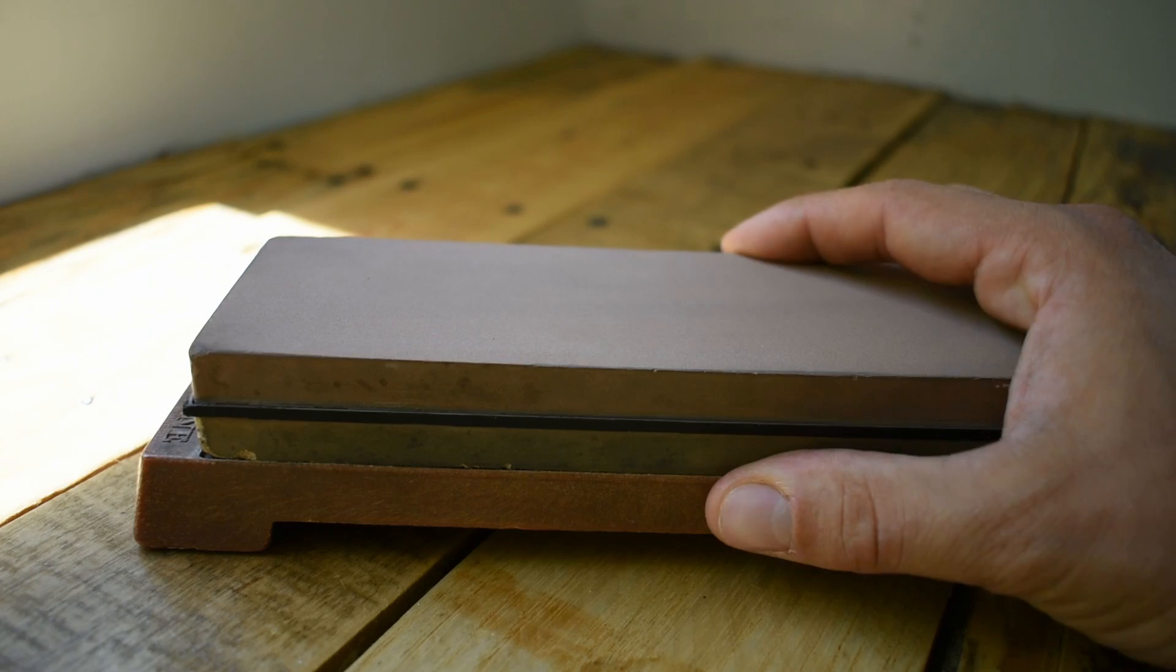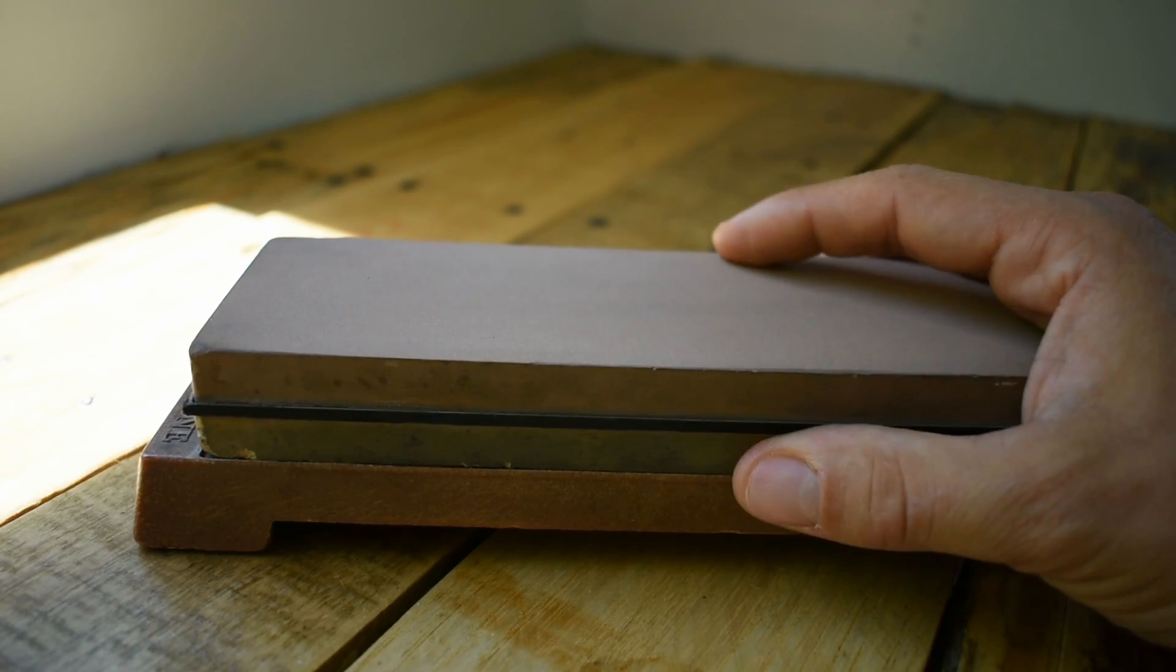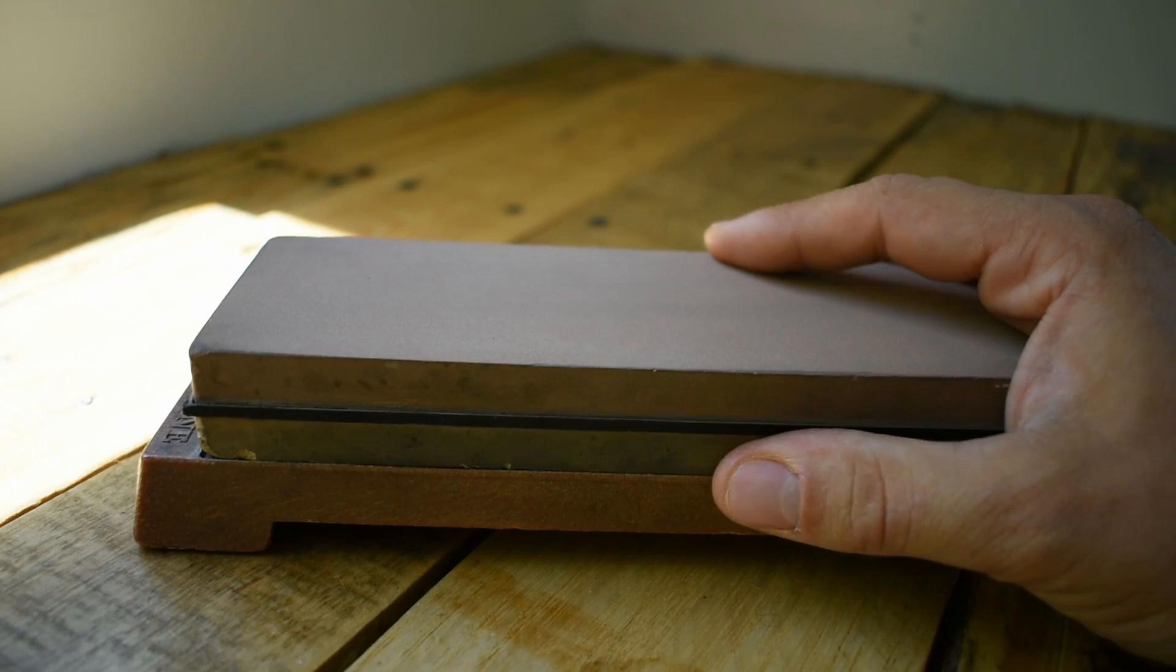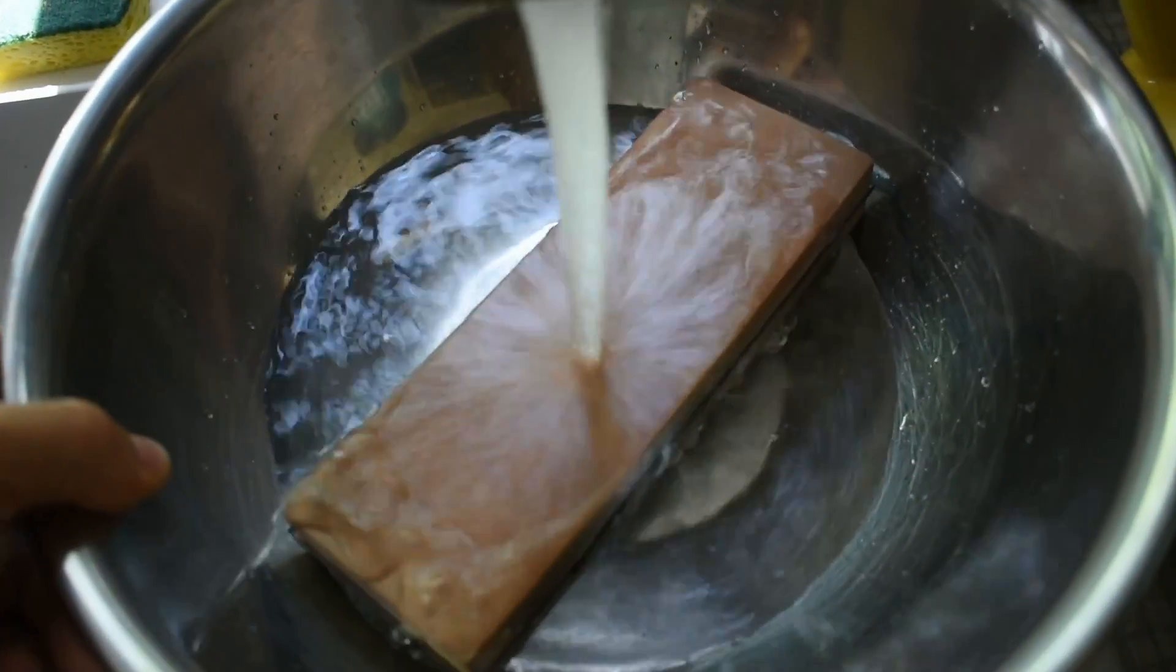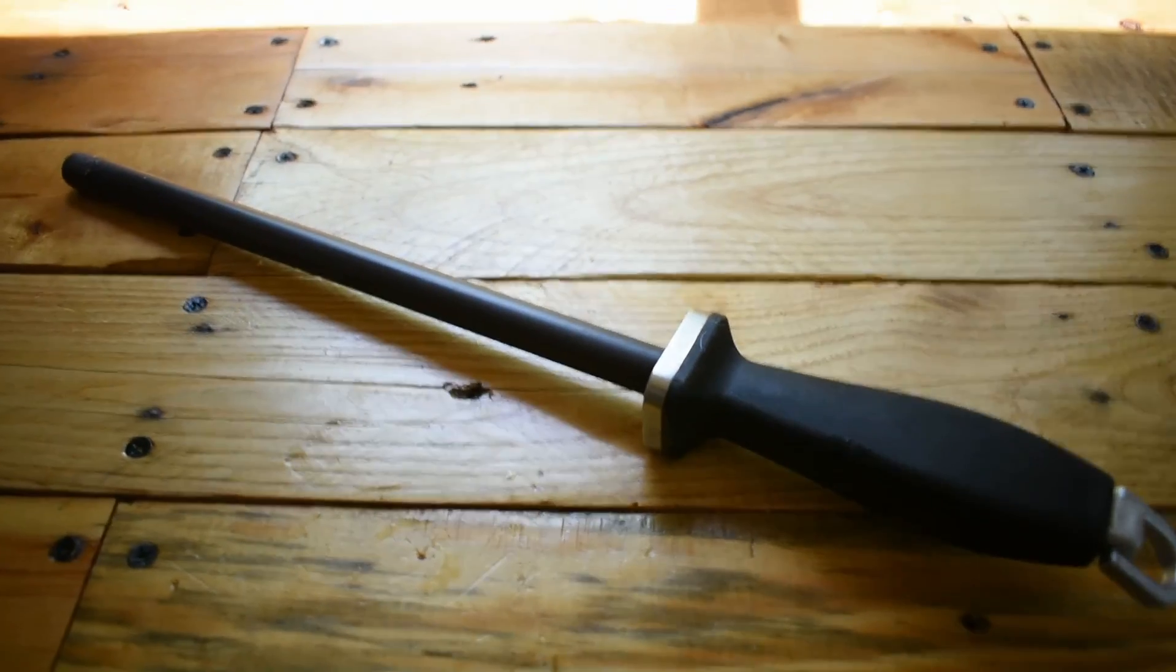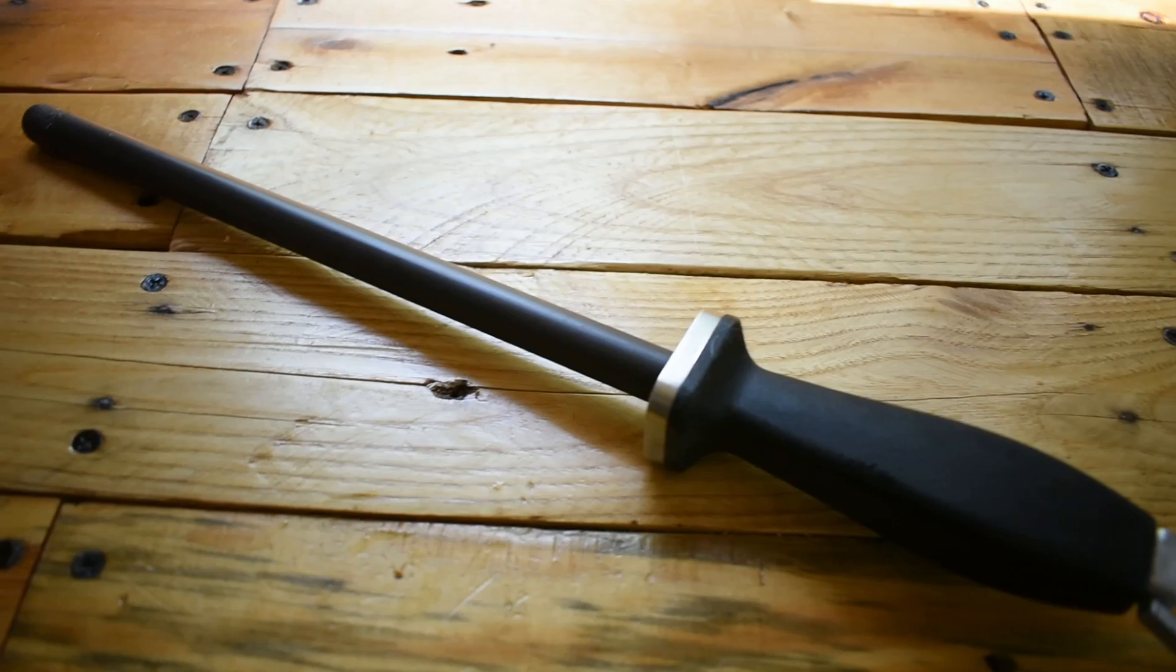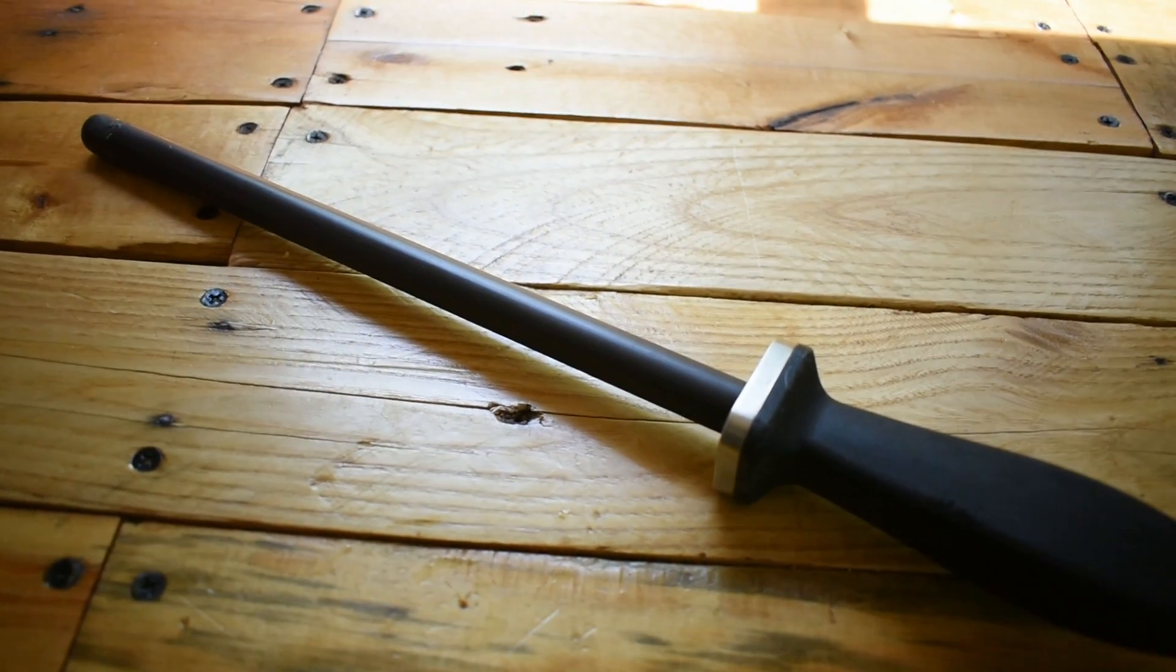Now before we can start sharpening a knife, we got to soak the stone. You want to soak it in some water. You want to cover it in some water and leave it soaking for about 15 minutes. So this here is my honing rod or a honing steel. These are used to keep your knife sharp, not make it sharp.